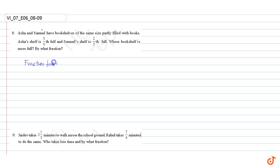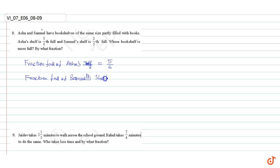Fraction full of Asha's shelf is equal to five by six. Fraction full of Samuel's shelf is two by five. Converting to like fractions we get 25 divided by 30 and 12 divided by 30.